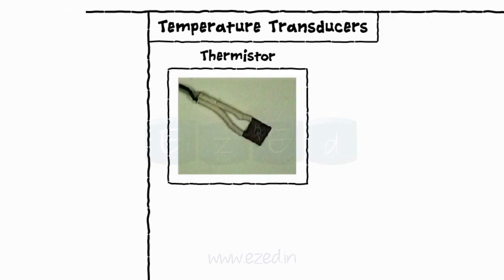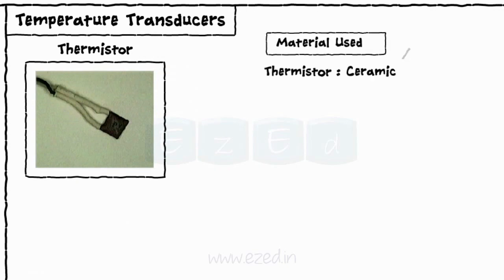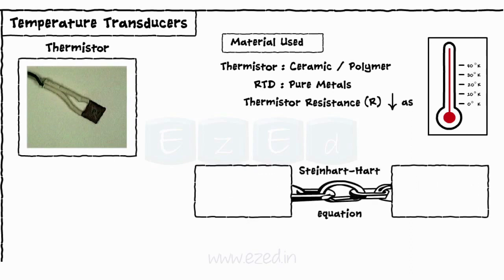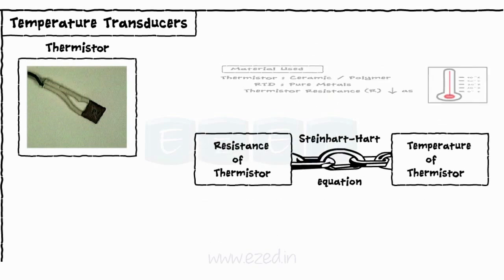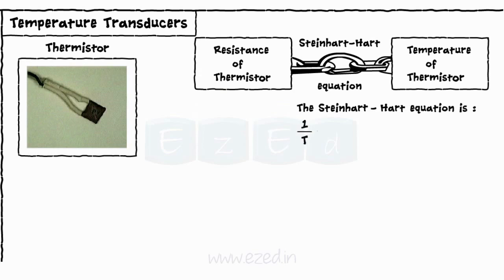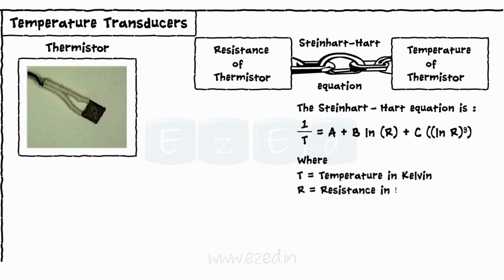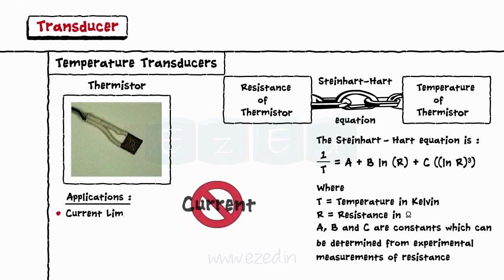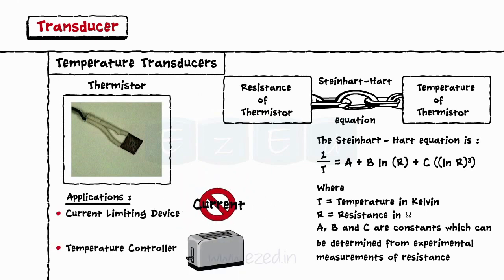Thermistors differ from RTDs. The material used in a thermistor is generally ceramic or polymer, while RTDs use pure metals. Thermistors are made up of semiconductor materials, so the resistance of a thermistor decreases with increase in temperature. Using the Steinhart-Hart equation, we can calculate the temperature of the thermistor from the measured resistance. The Steinhart-Hart equation is: 1/T equals A + B·ln(R) + C·ln(R)³, where T is temperature in Kelvin, R is resistance in Ohms, and A, B, and C are constants determined from experimental measurements. Common applications of thermistors include use as a current limiting device and for temperature control in toasters, coffee makers, etc.